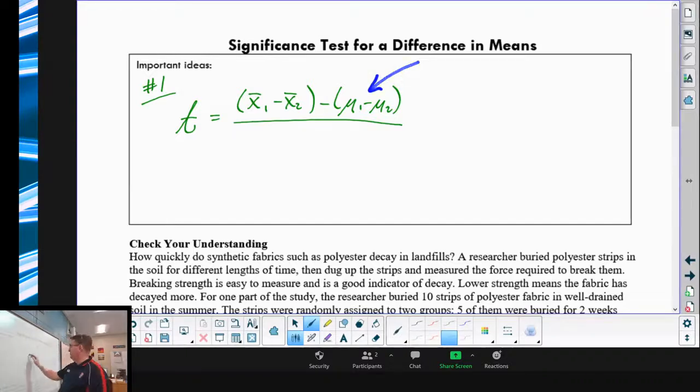And then remember our standard deviation down here is going to be the standard error of the first one squared. Always make sure you do that, plus and then divided by n1, and then this sample standard error standard deviation of the second one divided by n2.